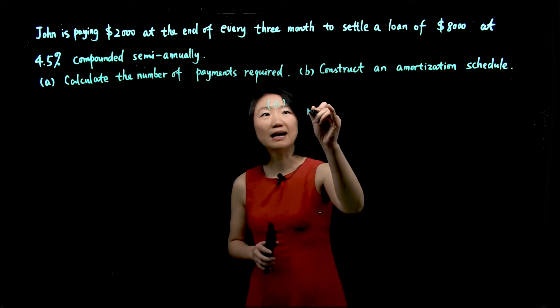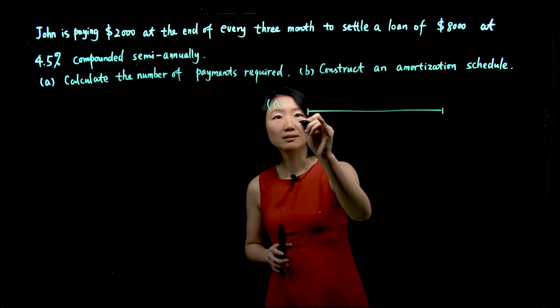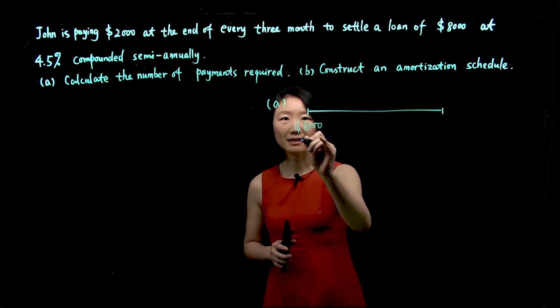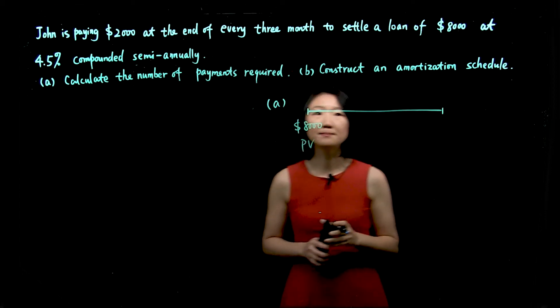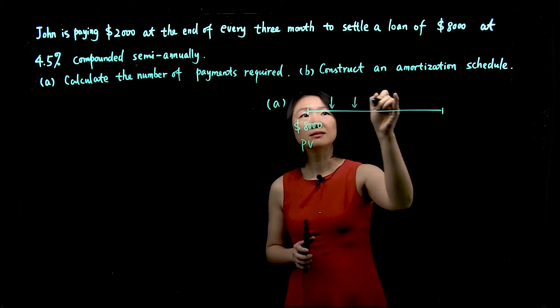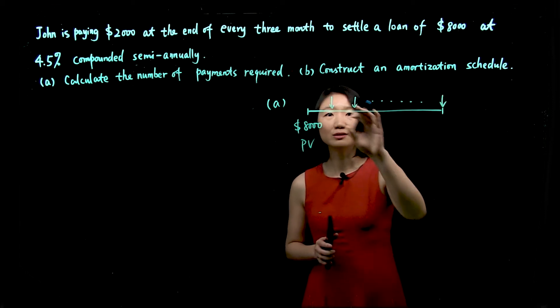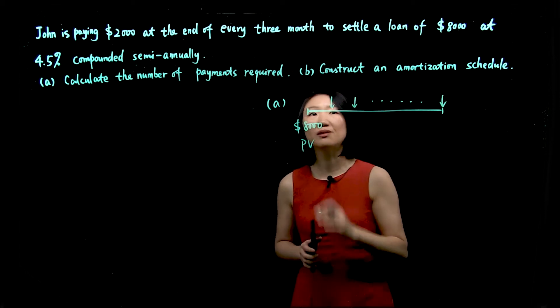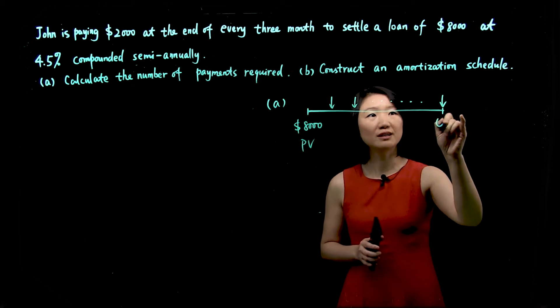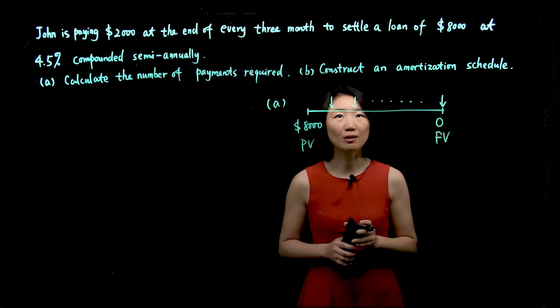Let's look at A. We'll draw a timeline. So John has this loan of $8,000. That is the present value, PV. And he's trying to make $2,000 as periodic payment to settle the loan. So we have PMT is $2,000. At the end of the term, future value would be zero. He would be paying off the loan, so FV is zero.